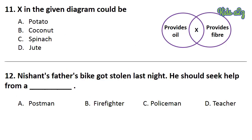Question 11: Eggs in the given diagram could be — please look at the diagram. The answer is Option B — Coconut. Question 12: Nishant's father's bike got stolen last night. He should seek help from a dash. The answer is Policeman.